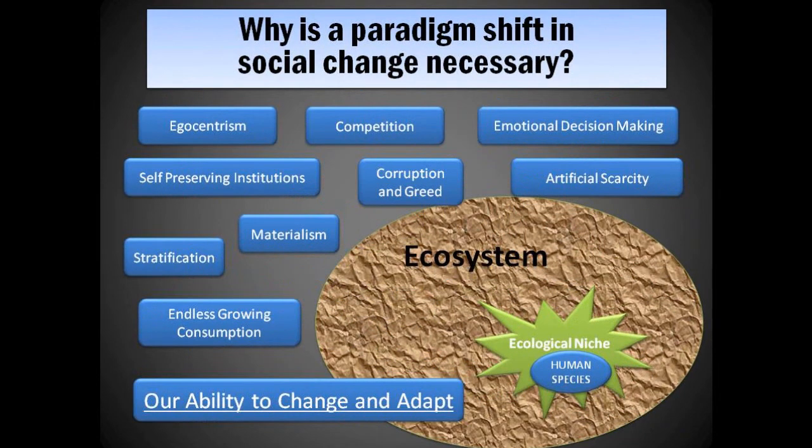Our egocentric, disconnected view of our existence; the wasteful, competing environment we created for ourselves; emotional decision-making at the expense of others; the self-preserving institutions we have created that are not only parasitic to the human condition but are also enemies of change and sustainability; the endless corruption and greed our society perpetuates and passes on from generation to generation; the artificial scarcity our monetary system creates. We have enough food to feed all the people on the planet — we just don't have the right framework to make it happen.